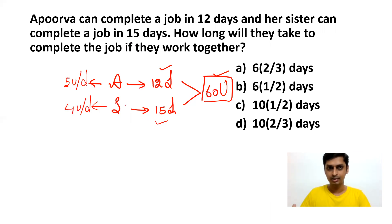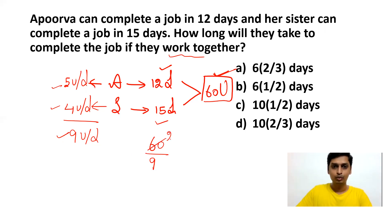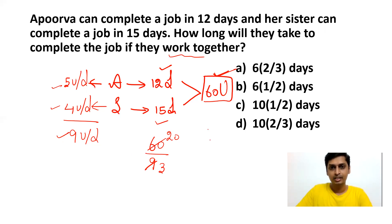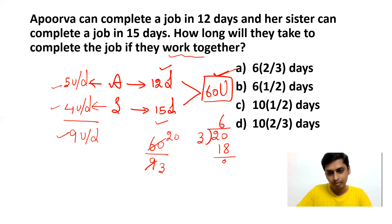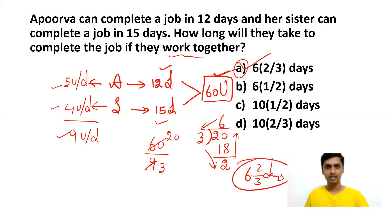If they work together in a single day, they complete 5 + 4 = 9 units. The total work is 60 units and they do 9 units per day, so it takes 60 ÷ 9 = 20/3 days. Converting the improper fraction to a mixed fraction: 3 × 6 = 18, remainder 2, so the answer is 6 and 2/3 days. The answer for this question is 6⅔ days.